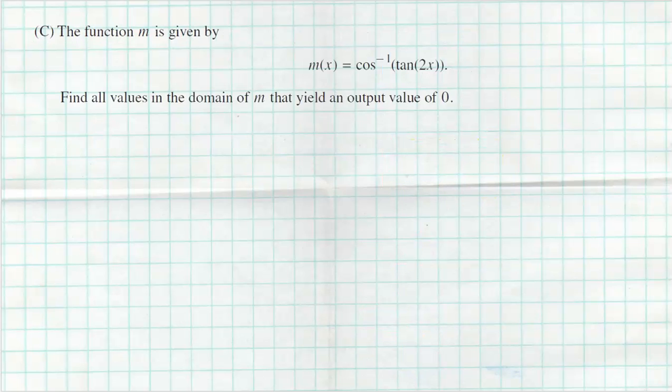Finally, part C — the one question everyone's talking about as extremely hard. Let me show you how it's actually pretty easy. We have function M, where M of x equals cosine inverse of tangent of 2x. Find all values in the domain of M that yield an output value of zero. I turn M of x into zero and start solving.